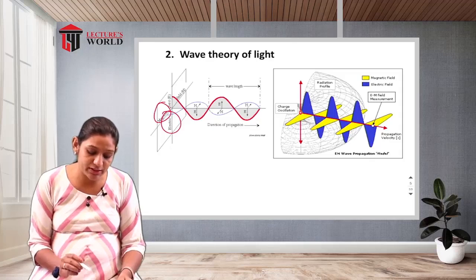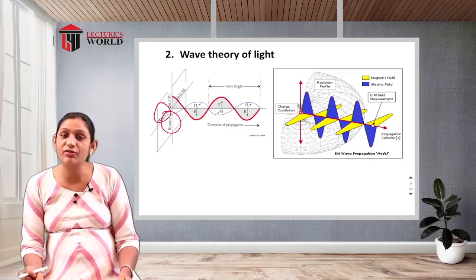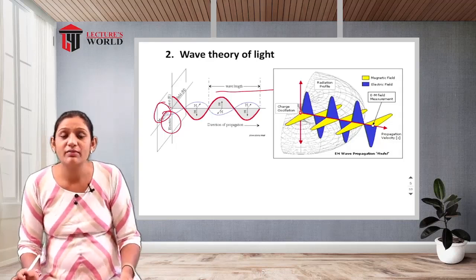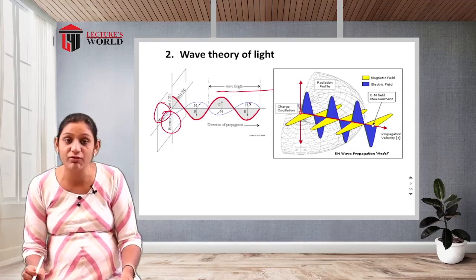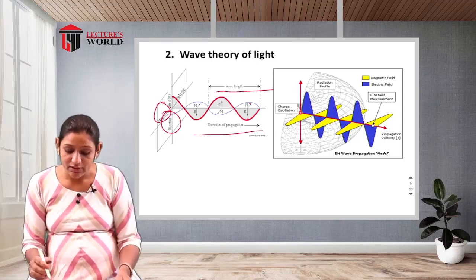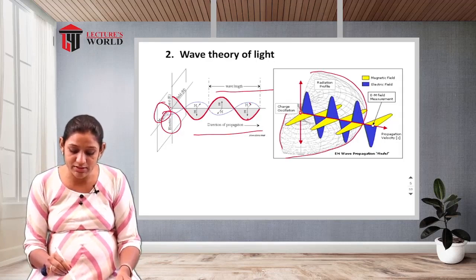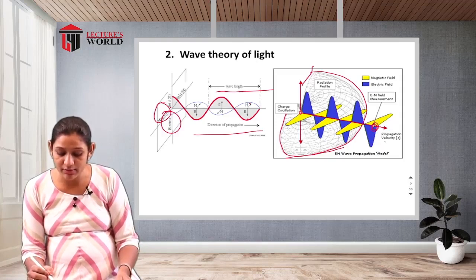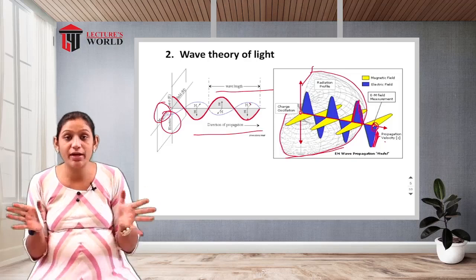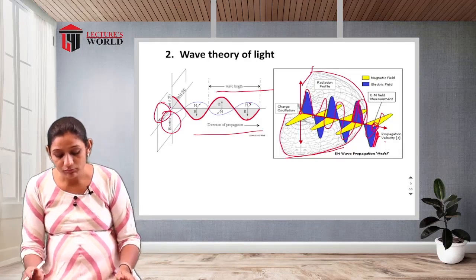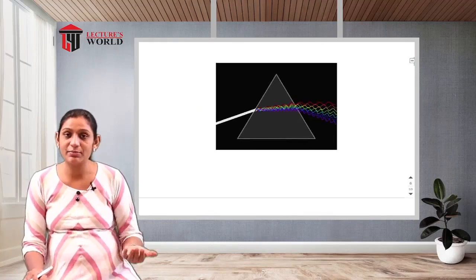The wave theory of light involves an electric field (E) and a magnetic field (H). These two fields are perpendicular to each other and to the direction of propagation. This forms the electromagnetic wave profile showing how light propagates as a wave, with the electrical field spreading over its potential in a changing manner.